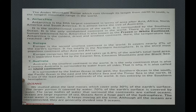Europe is the second smallest continent in the world. It covers nearly 2% of the earth's surface and lies totally in the Northern Hemisphere. It is the third most populous continent after Asia and Africa. Europe comprises 50 countries and takes up 6.8% of the world's total land area. It is separated from Asia by the Caspian Sea, Caucasus Mountains and the Black Sea.